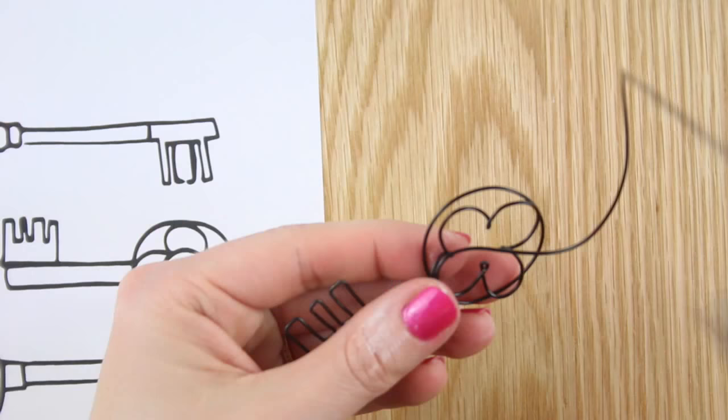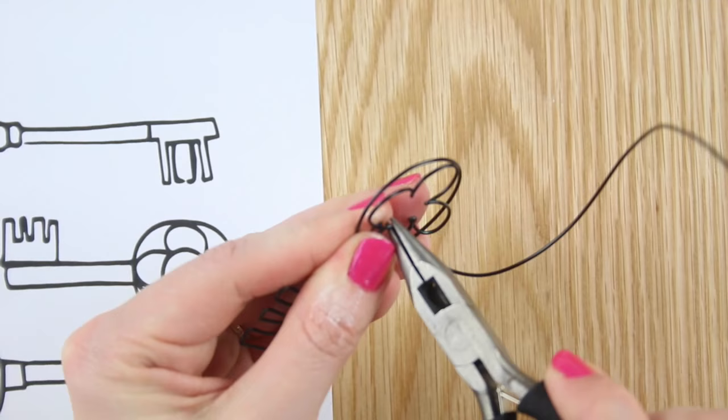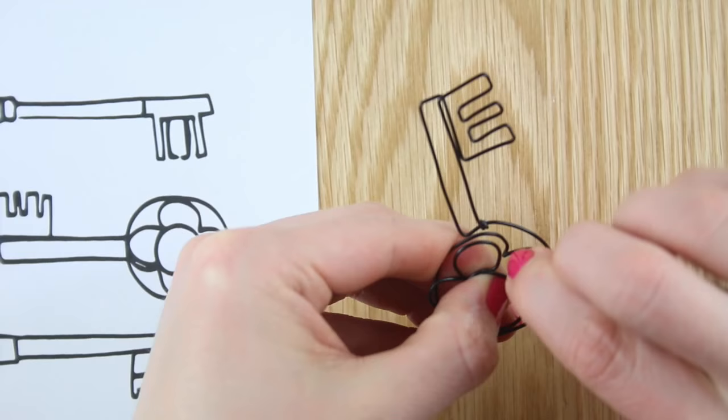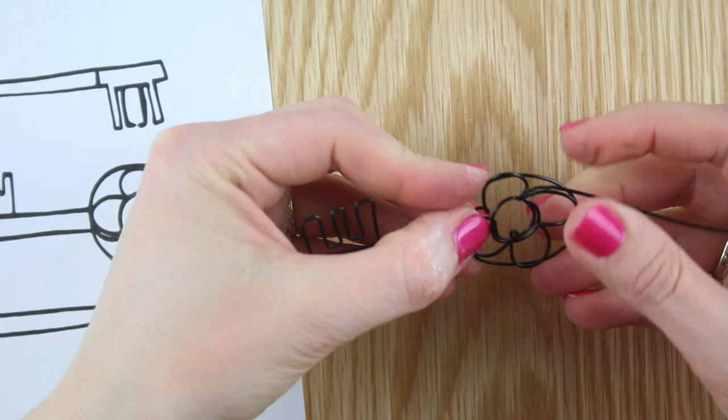Use the pliers to bend the wire back on itself to do the small circle and curve the wire around in an anti-clockwise direction. Once you reach the top, use the pliers to bend the wire to the right and retrace around the top petal to the outer circle of the bow.